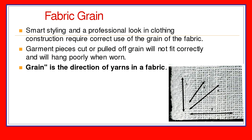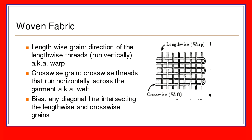When you use fabric to create a garment, you have to position your pattern pieces correctly so that you cut on grain or off grain, depending on the instructions. Here's another visual of a woven fabric — you can see the lengthwise yarns going up and down, also referred to as the warp, and the crosswise yarns going left to right, also referred to as the weft. You can see how the yarns crisscross.